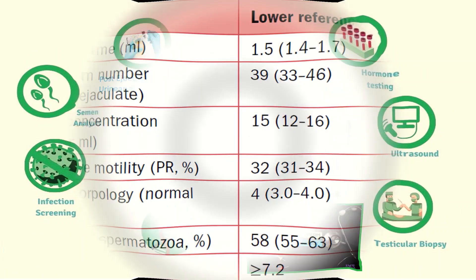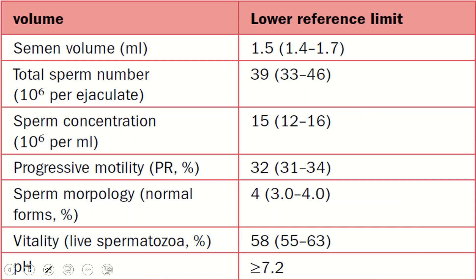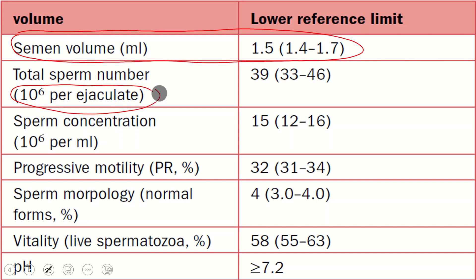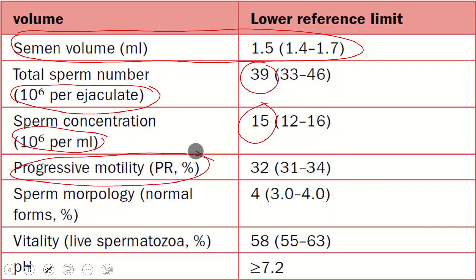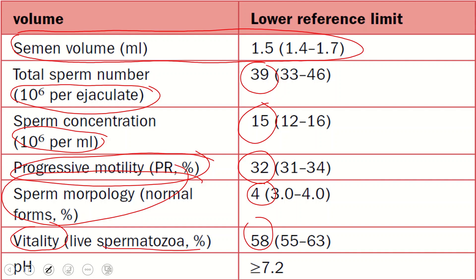Let us discuss semen analysis. It is important to understand the complete report properly. Normal semen volume is on average 1.5 ml. Sperm number per ejaculate averages 39 million, while sperm concentration per ml is about 15 million per ml. Progressive motility is 32%, sperm morphology is 4%, vitality — meaning live sperm — should be at least 58%, and pH should be more than 7.2.